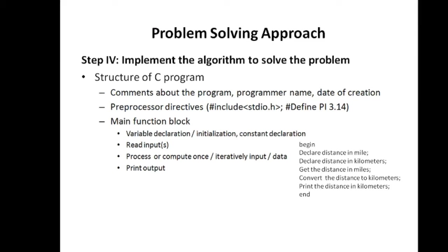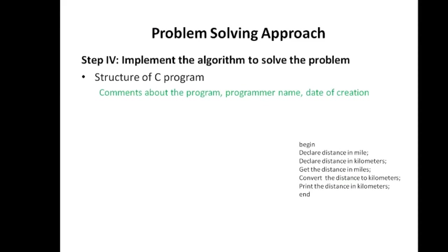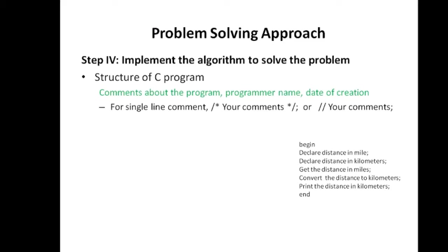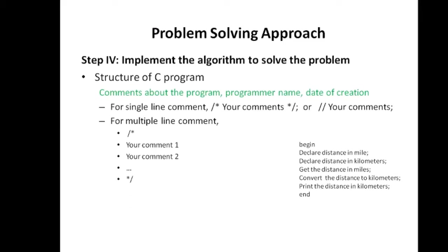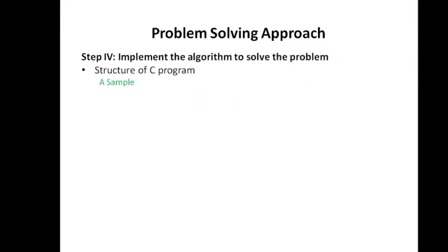Now we will understand how to create a C program. First, we look at comments. For a single-line comment, you can use slash-asterisk, write your comment inside, and close it with asterisk-slash. You can also use a double slash for comments. For multiple-line comments, use slash-asterisk followed by your comments one by one, then end with asterisk-slash. These are the two ways to write comments in C.